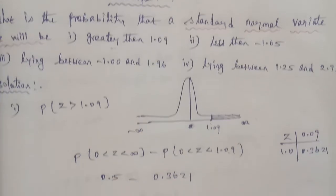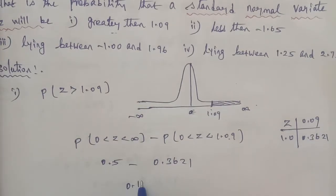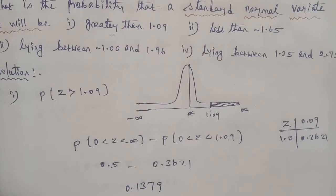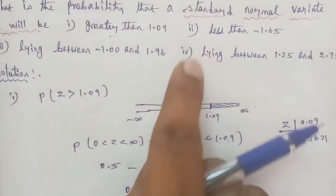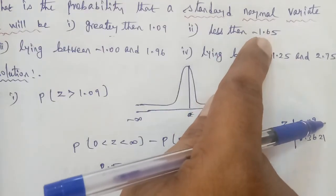So the table entry gives 0.3621. Therefore, the answer is 0.5 minus 0.3621 equals 0.1379. This is the answer for subdivision 1. Subdivision 2 asks for P(Z < minus 1.65).